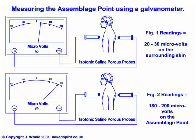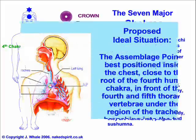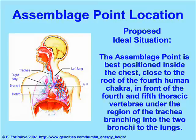My opinion is that what was measured is actually the diameter of the front and rear locations of the horizontal energy passing through the assemblage point. I claim that a properly located assemblage point is positioned inside the chest, close to the root of the 4th human chakra of the major 7 chakra system — in front of the 4th and 5th thoracic vertebrae, under the region of the trachea branching into the two bronchi to the lungs. In this way, our breathing pumps energy into the assemblage point with each inhale and exhale cycle.